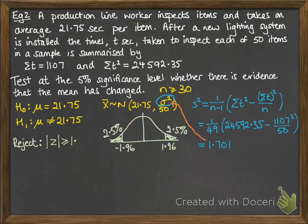We would reject if the modulus of z is greater than or equal to 1.96. Work out t̄. We don't know that one yet, so using the sum of t over n, our average, our mean for the sample is 22.14.